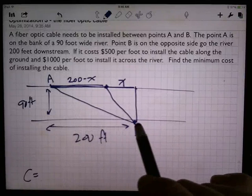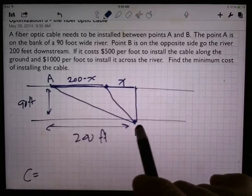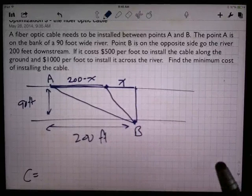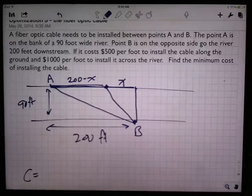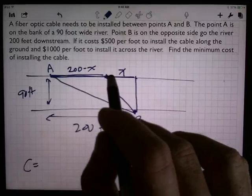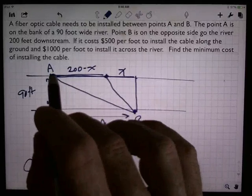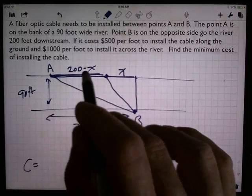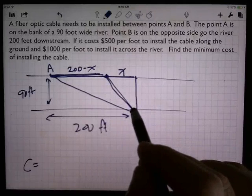So the setup is very similar to a lot of problems, but in each one there's a little difference of what are you trying to do. In this case, I'm trying to minimize my cost. So what I need to do is I need to figure out the cost of each one of these two pieces. So there's going to be the cost along this side and then the cost going across the water.